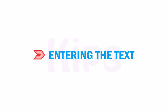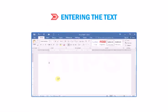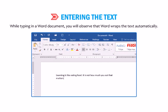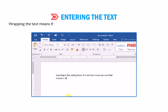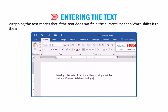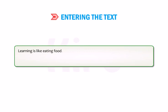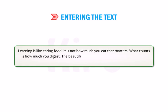Let's find out how to enter text in a document. While typing in a Word document, you will observe that Word wraps the text automatically. Wrapping the text means that if the text does not fit in the current line, then Word shifts it to the next line by default. Type the following text and observe the wrap effect: "Learning is like eating food. It is not how much you eat that matters. What counts is how much you digest. The beautiful thing about learning is that no one can take it away."